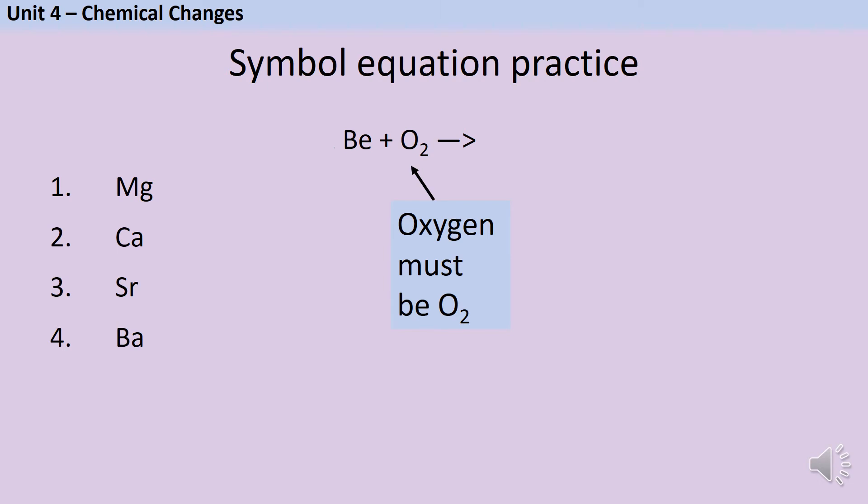Now let's think about the compound that gets made. We know that beryllium will react with oxygen to make beryllium oxide. And we've said that elements from Group 2 react with oxygen in a 1 to 1 ratio. So therefore, my formula for beryllium oxide must be BeO.